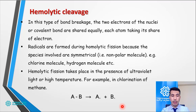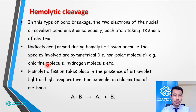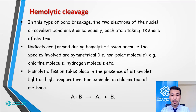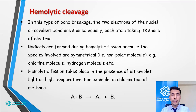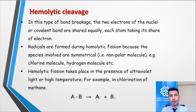Remember: in hemolytic cleavage, radicals are formed — not ions. Hemolytic fission takes place in the presence of ultraviolet rays or very high temperature. For example, in chlorination of methane, chlorine has a single bond between its two atoms. When this bond is broken, each chlorine atom takes its own electron and turns into a chlorine radical. That kind of bond cleavage is known as hemolytic bond cleavage.